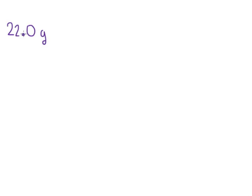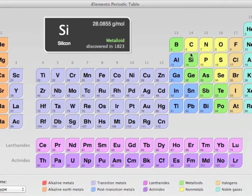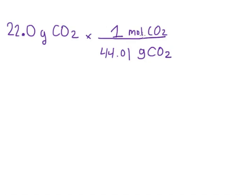We had 22.0 grams of CO2. On the bottom, we need grams of CO2 — grams per mole. How many grams of CO2 are in one mole of CO2? This is what we're going to find from our periodic table. Carbon is 12.01 grams per mole, and oxygen is about 16 grams per mole. So CO2 has two oxygens and one carbon, so that'll be about 32 plus 12, which is 44.01 grams of CO2 in one mole of CO2.